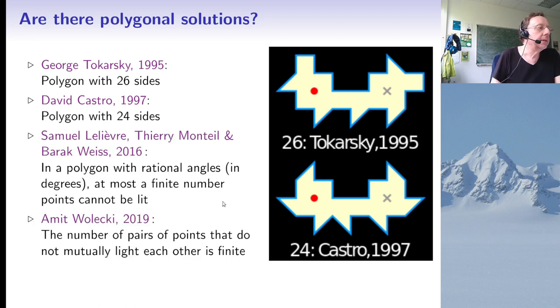Now one can wonder whether it's possible to find polygons which have larger areas that you cannot light. There is a rather recent negative result by Samuel Lelièvre, Thierry Monteil and Barak Weiss that says if all angles of the polygon are rational, so in degrees, rational multiples of 360 degrees, then there is at most a finite number of points that cannot be lit. In other words, there may be no point at all, but if there are points there are only finitely many points. There is also a more recent strengthening saying that there will always be a finite number of pairs of points that cannot light each other.